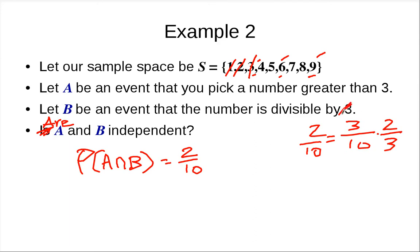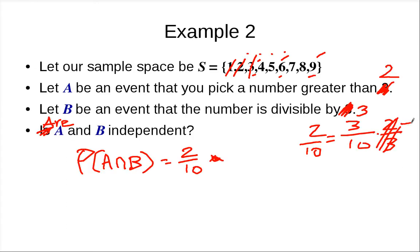If I change A to 'greater than 2', P(A∩B) remains the same, but P(A) changes to 8/10 (or 7/10 depending on sample space adjustments), so the product P(A)·P(B) no longer equals P(A∩B). So these two events become dependent.